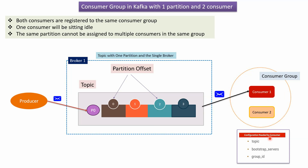To write a consumer, there are configurations needed. The first is the topic from which the consumer will consume messages. The second is bootstrap servers, which is the Kafka server IP address and port number. The third is the group ID, which specifies which group the consumers are registered in.